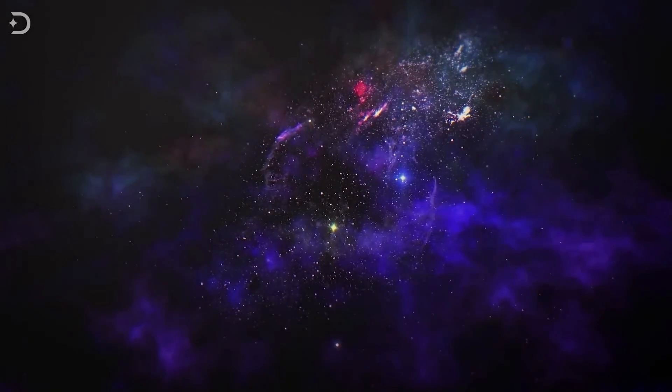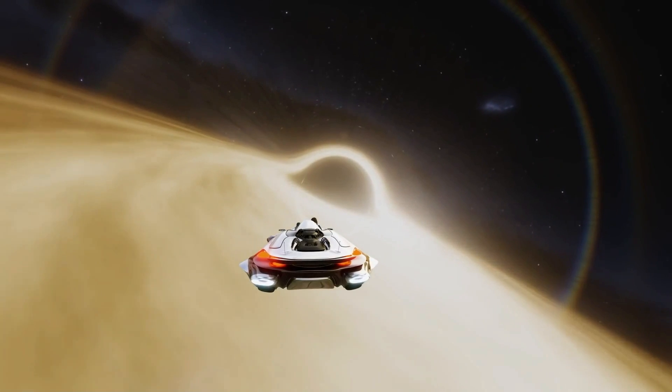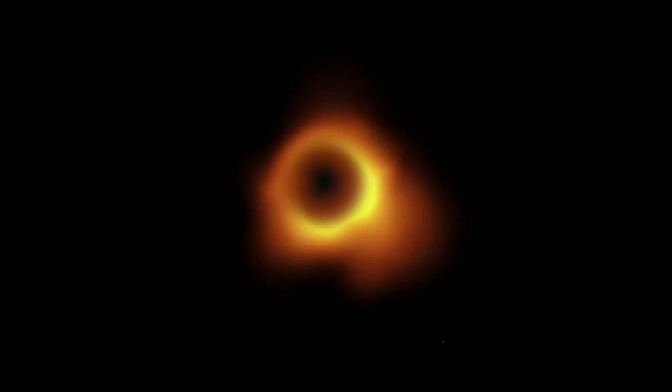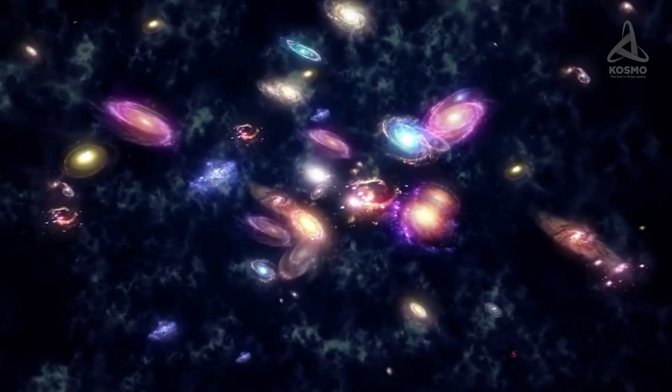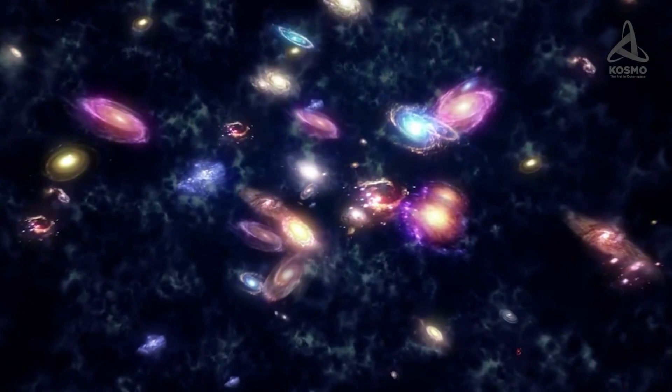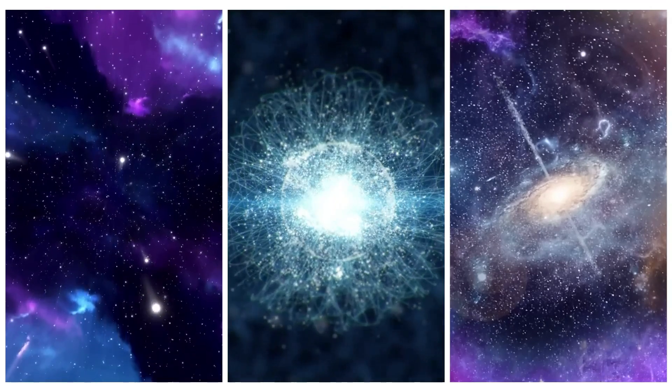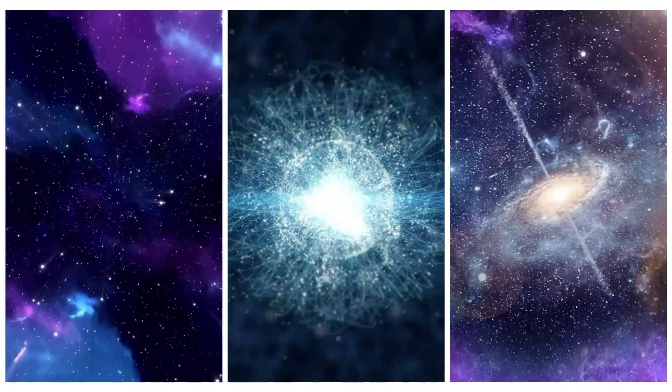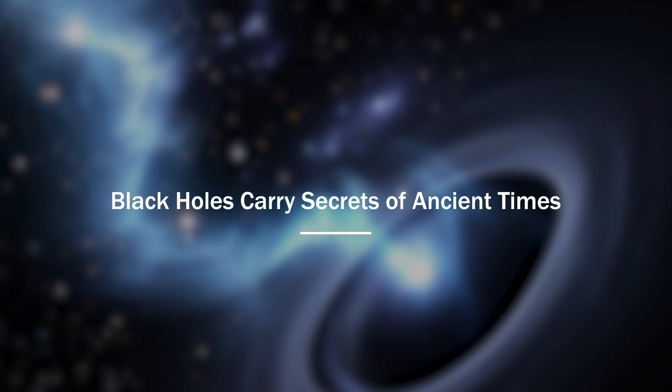Despite losing mass over time due to Hawking radiation, black holes do not disappear completely for many millions or even billions of years. In fact, even after their event horizons have shrunk significantly, the interior of the black hole remains at an infinite density and cannot collapse any further. So, even if a black hole swallows everything in its path, it could just exist across time without a problem. Black holes carry secrets of ancient times.